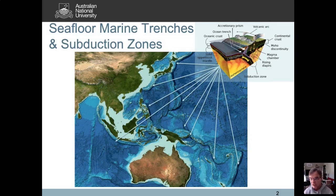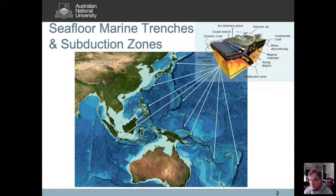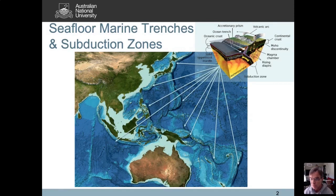Subduction zones are scenes of the most intensive tectonic activity on the planet. That's where volcanic arcs develop, often accompanied by high mountain ranges due to strong compressive forces. The plate boundary — called a megathrust — is responsible for generating by far the largest earthquakes we have, which also produce large and sometimes destructive tsunamis. These marine trenches are associated with very intense tectonic activity, setting the scene for large earthquakes, tsunamis, and volcanic eruptions.